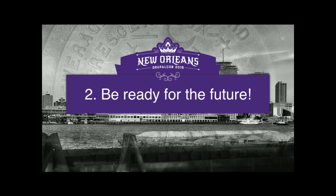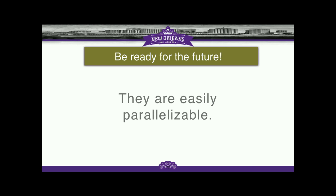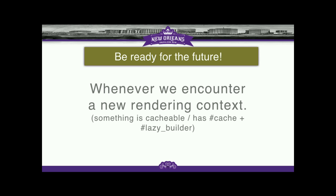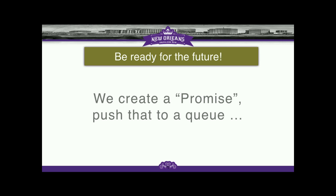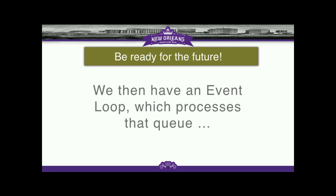But there's more — be ready for the future. Because we have this great render tree in Drupal, and trees have one great property: they're easily parallelizable. Whenever we encounter a new rendering context — something that's cacheable and independently buildable — instead of rendering it directly, we just create a promise, push it to a queue, replace it with a wait placeholder, and return. Before sending the page we obviously need to process the queue. This would work recursively, and we'd have an event loop which processes that queue. For example in Drupal, a random worker could just randomize the order — and then fun begins.